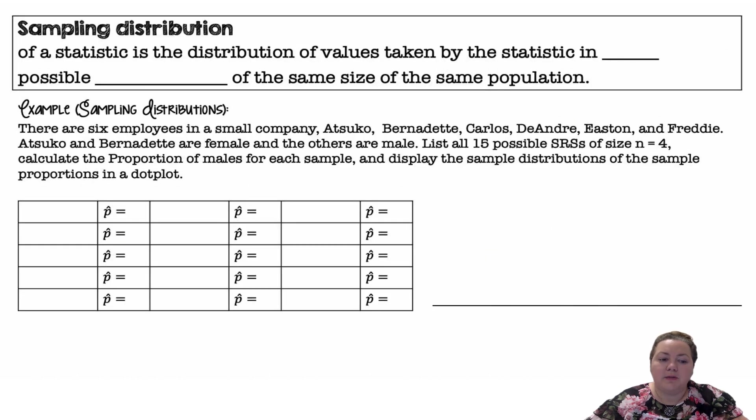A sampling distribution of a statistic is the distribution of values taken by the statistic in all possible samples of the same size of the same population. So we'll look at an example. There are six employees in a small company: Atsuko, Bernadette, Carlos, DeAndre, Easton, and Freddie. Atsuko and Bernadette are female, and the others are males. List all 15 possible simple random samples of size n = 4. Calculate the proportion of males in each sample and display the sample distribution of sample proportions in a dot plot.